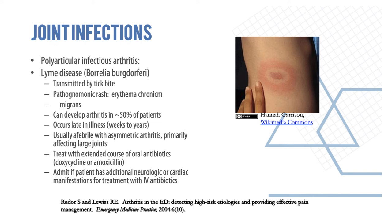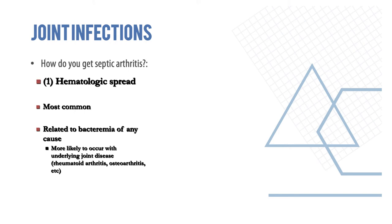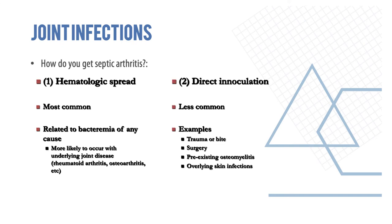About 50% of septic arthritis cases involve large joints, especially the knee and hip, but also the wrist and ankle. IV drug users have a predilection for axial joints like the sternoclavicular or sternomanubrial joints. Two types of septic arthritis are non-gonococcal and gonococcal; gonococcal septic arthritis results from bacteremic spread of sexually transmitted infection. Hematological spread is the most common route for septic arthritis, related to bacteremia of any cause including underlying joint disease like rheumatoid arthritis. Direct inoculation — from surgery, pre-existing osteomyelitis, or skin infections — is less common.